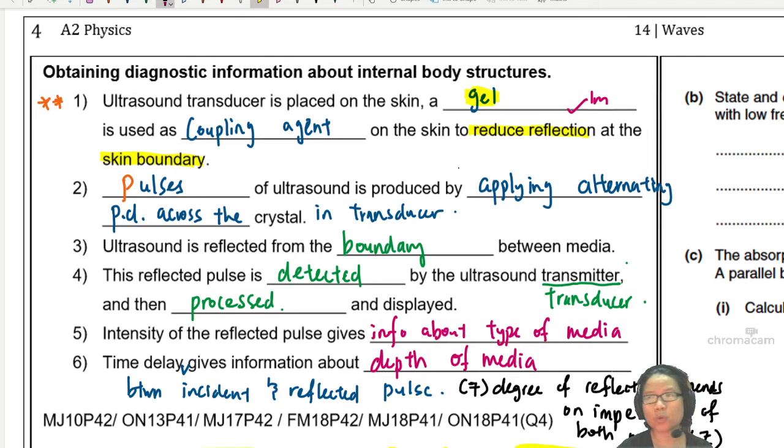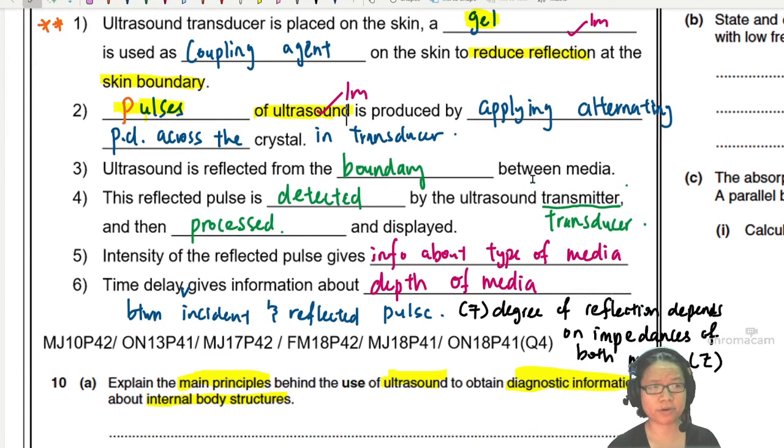Second one, we are using pulses of ultrasound. You mentioned the word pulses of ultrasound, it's good enough. You will get one mark already. And then how do we get pulses? We get pulses by applying alternating potential difference across the crystal in the transducer. In the later years, they don't award mark for this but the earliest they will. I don't know man, just write. How do we get ultrasound? We put alternating potential difference.